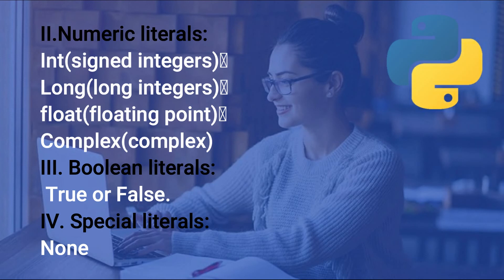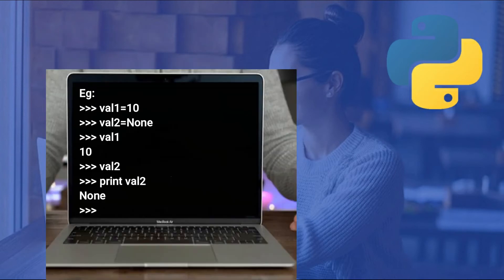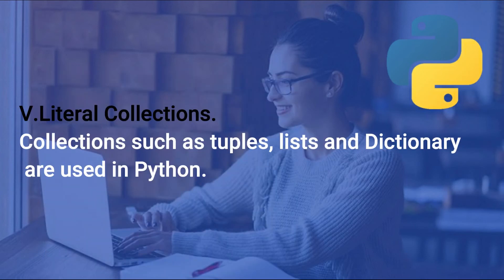The next type is numeric literals — integer, long, float, complex. Then boolean literals, which are true or false. Special literals: None is a special literal. For example, Val1 equals 10, Val2 equals None. Val1 will print 10, Val2 will print None. The next type is literal collections — tuples, lists, and dictionaries. These will be covered in the next video.